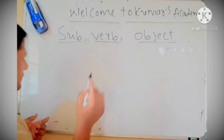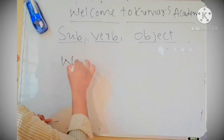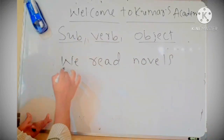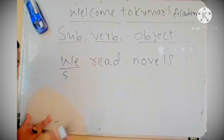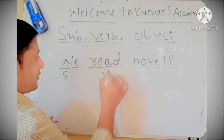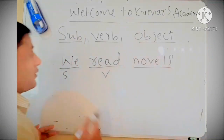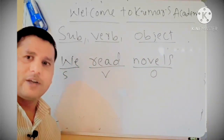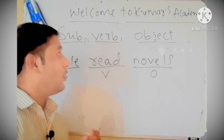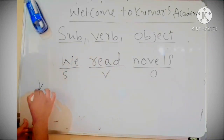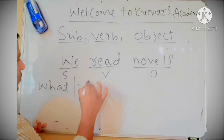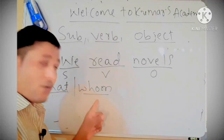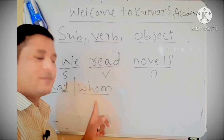I will write some more sentences on object. We read novels. We is a subject — I have already told you: I, we, you, he, she. Read is a verb. And novel — what do we read? Novel. Novel is object. If you want to find out the object, there are two questions you have to ask: one is what, another is whom. When you ask this question, the answer that you get is called object.